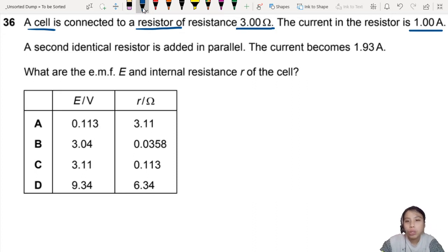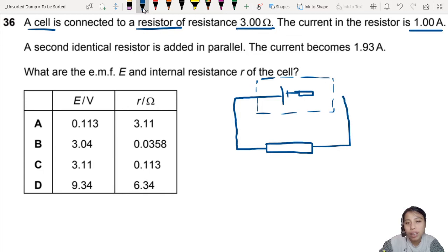So we draw a cell to one resistor. Is there internal resistance? Oh, there is internal resistance. So we gotta draw a tiny little internal resistor and give it a little dotted box to show the cell. Resistance 3 ohms, current in the battery is 1 amp. That's pretty big for a battery.